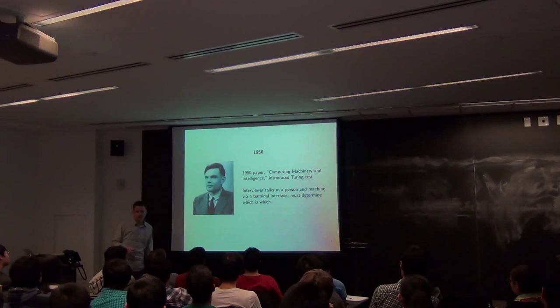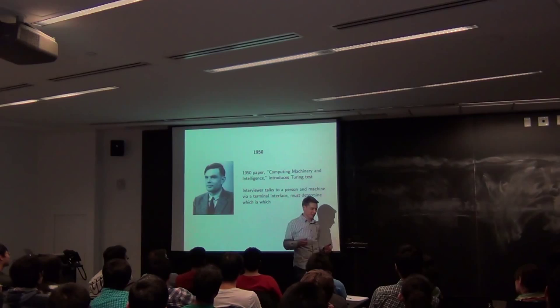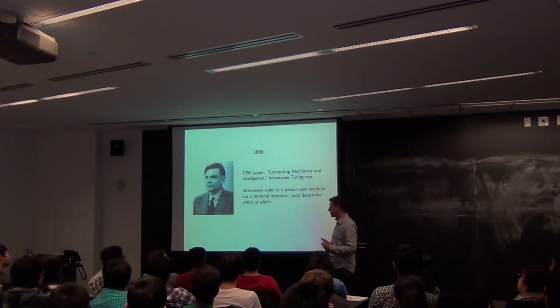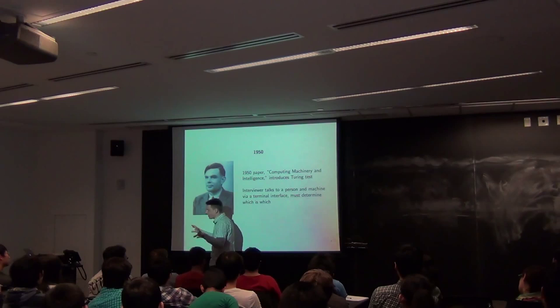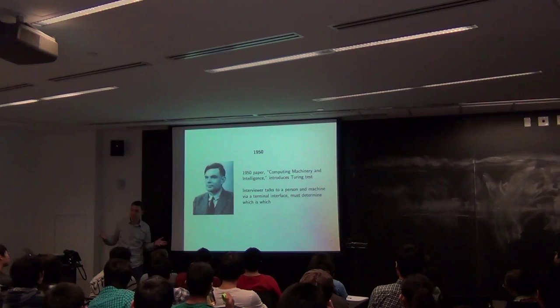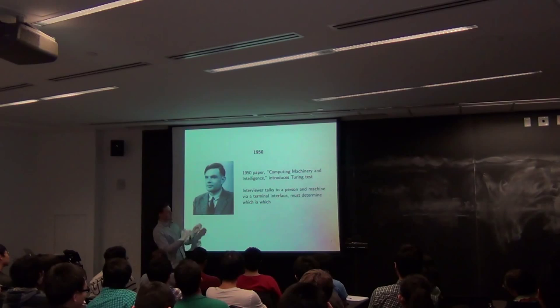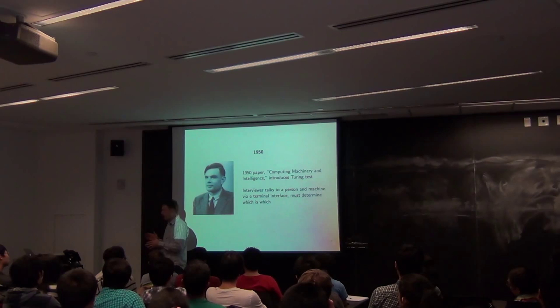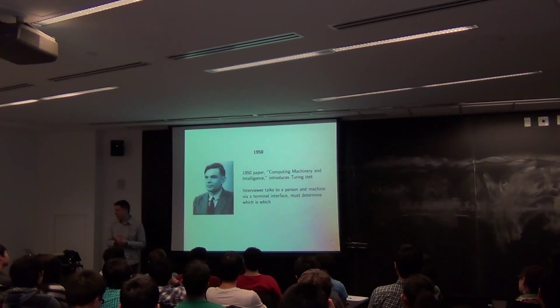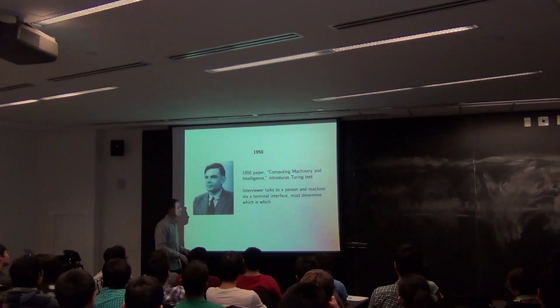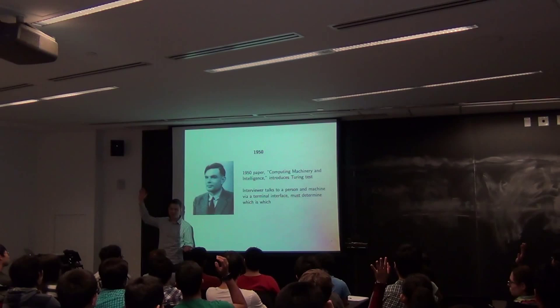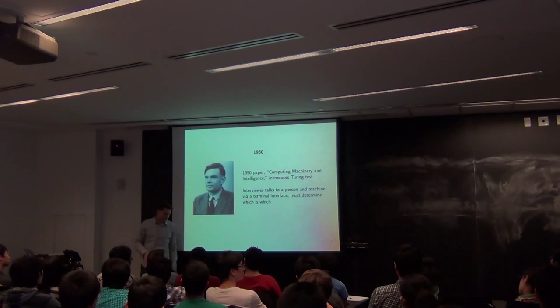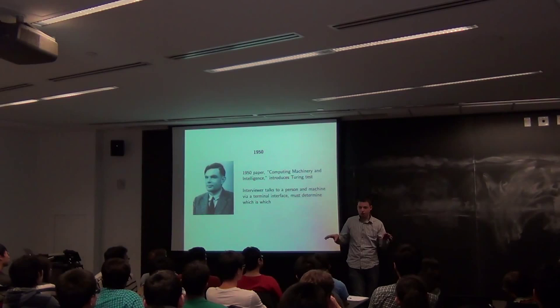Every textbook describes AI's start differently — Russell-Norvig traces it to Aristotle. But for our purposes, we'll say AI really came into its own with Alan Turing and the famous Turing test, one of the first times the idea of computers as intelligent beings really came about. In 1950, Alan Turing published a paper called 'Computing Machinery and Intelligence' in Mind, a philosophical journal. Who here is familiar with the Turing test? Not as many as I thought.